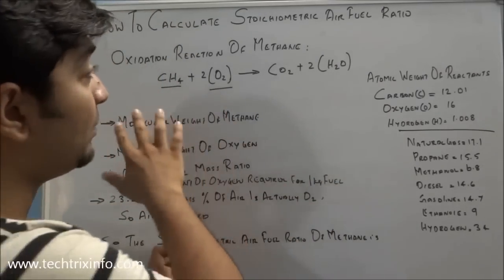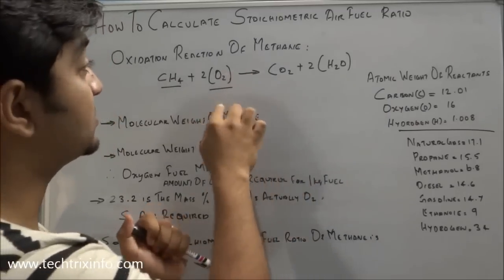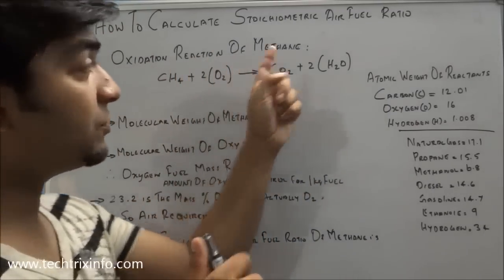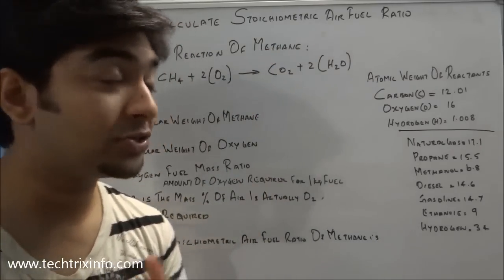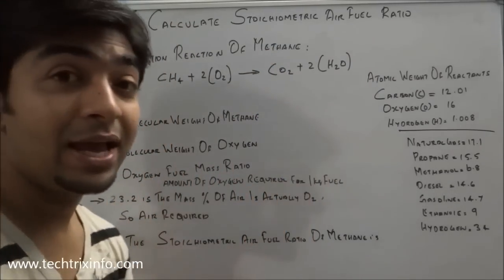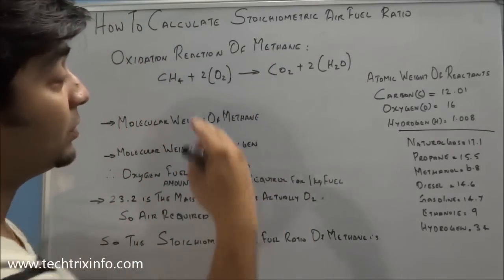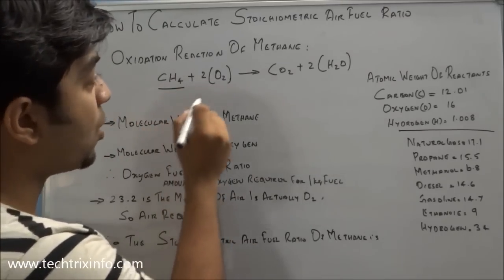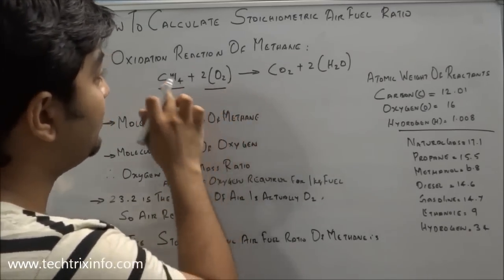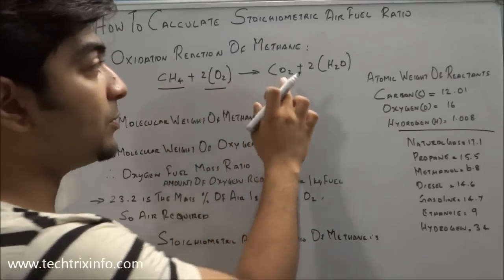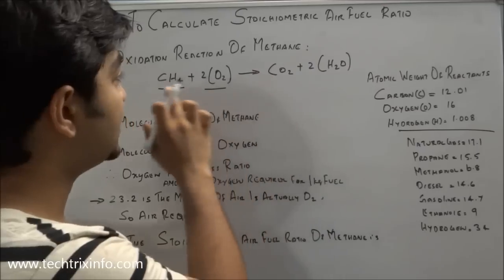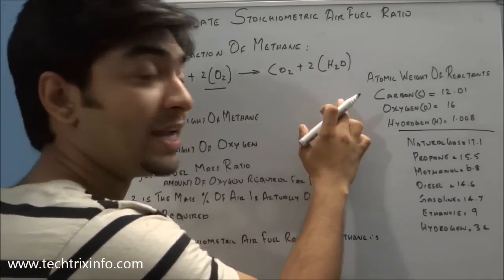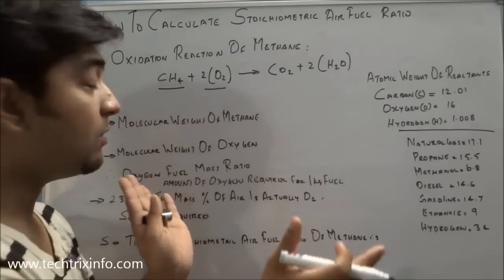Let's see how exactly the stoichiometric air-fuel ratio can be calculated if you know the chemical formula. Here I have shown the oxidation reaction of methane. To calculate the stoichiometric air-fuel ratio for the combustion of methane — methane is CH4 — it reacts with oxygen to give carbon dioxide and water: CH4 + 2O2 → CO2 + 2H2O.